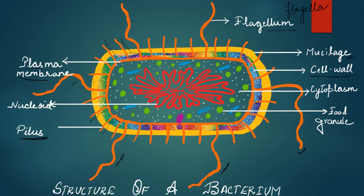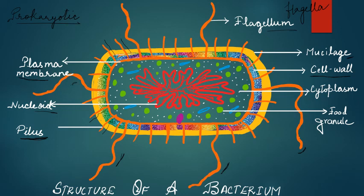Bacteria belong to the group of prokaryotic organisms, meaning they have a primitive type of nucleus — they don't have a well-defined nucleus with any boundary, and this nuclear region is called the nucleoid. Besides all these structures, some food granules are also present inside the bacterial cell, along with the liquid inside the cell which is called the cytoplasm.